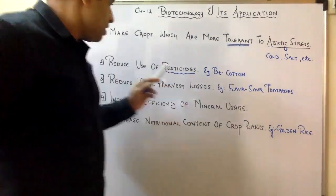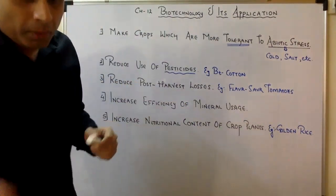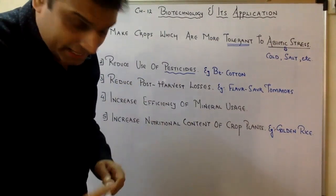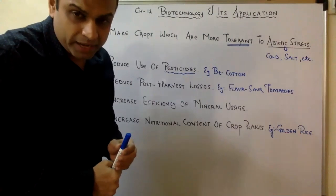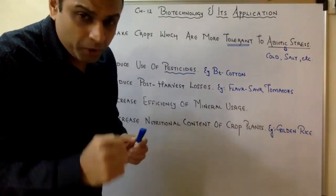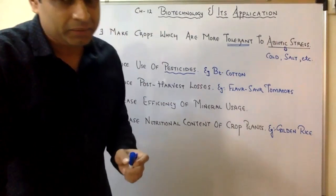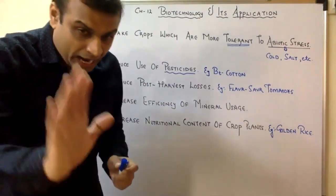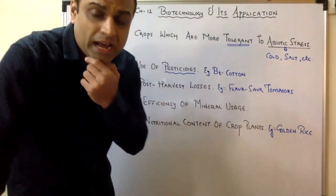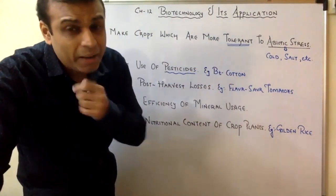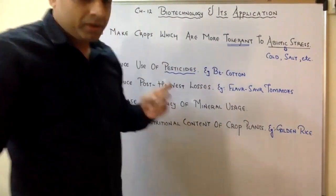Therefore, we need to create plants that are pest-resistant — if the pest eats the plant, the pest will die but the plant will not. We have a cotton variety called BT Cotton, which is a pest-resistant plant. The next aim of genetic engineering is to reduce post-harvest losses.